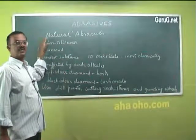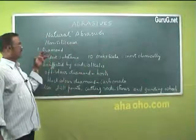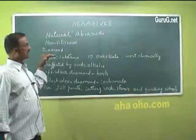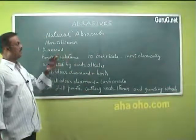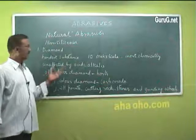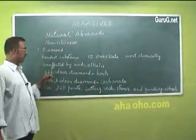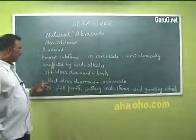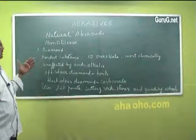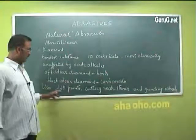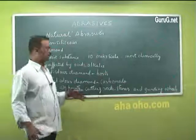Among the non-siliceous natural abrasives, the most important is diamond. Diamond is the hardest substance known, with a hardness value of 10 on the Mohs scale. It is chemically inert and is not affected by acids, alkalis, or any other chemicals. Off-color diamonds are known as borts, and black-colored diamonds are known as carbonado. Diamond is used as drill points, for cutting rocks and stones, and in grinding wheels.